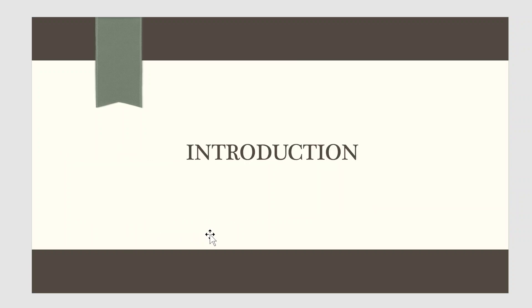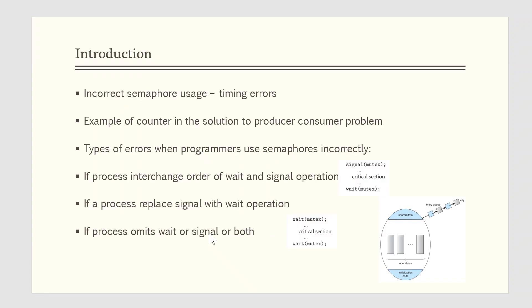Let's begin with the introduction. Although semaphores provide a convenient and effective mechanism for process synchronization, using them incorrectly can result in timing errors that are difficult to detect since these errors happen only if particular execution sequences take place and these sequences do not always occur. We have seen an example of such errors in the use of counters in our solution to producer consumer problem. It is for this reason that semaphores were introduced in the first place.